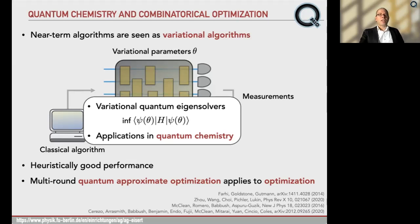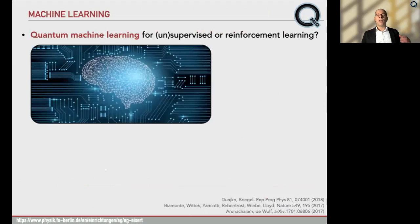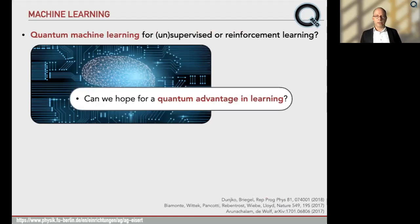A final application that is much moving into the center of things is to use quantum devices to assist in learning tasks. So specifically in unsupervised, supervised or reinforcement learning. So again, given how ubiquitous machine learning has become, it makes a lot of sense to see whether quantum computers can help here. So the make or break question is, can we actually hope for a quantum advantage of some precise sort in learning?